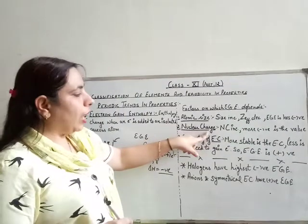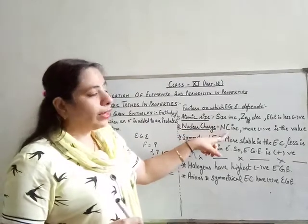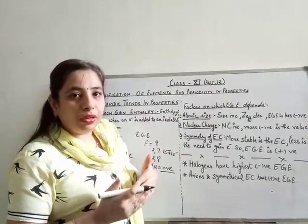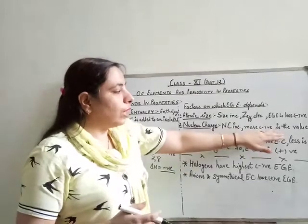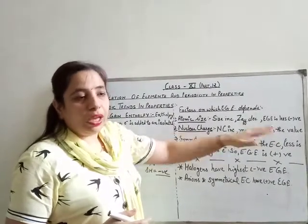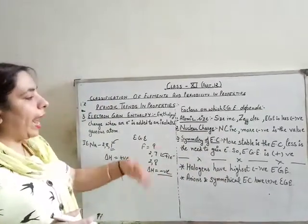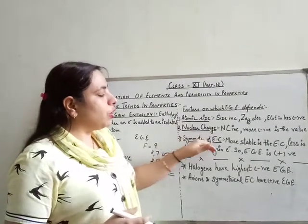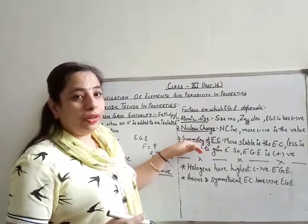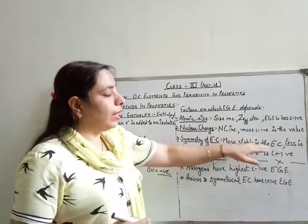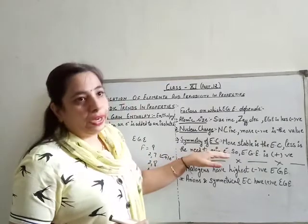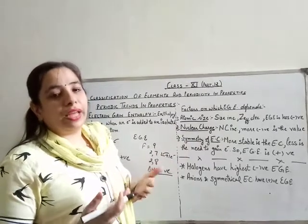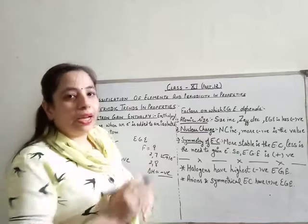The second factor is nuclear charge. If the nuclear charge is greater, the incoming electron is attracted more strongly, energy released is greater, and the electron gain enthalpy value is more negative. The third factor is the symmetry of electronic configuration. The more stable the electronic configuration, the less the need to gain an electron — this was also discussed in the case of ionization enthalpy.